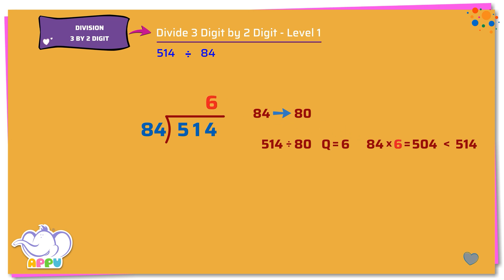Step 2. We multiply 84 and 6. We get 504. Step 3. We subtract 514 minus 504 equals 10. We stop division because 10 is less than 84. So the quotient is 6 and the remainder is 10.